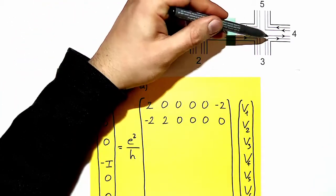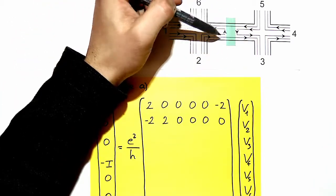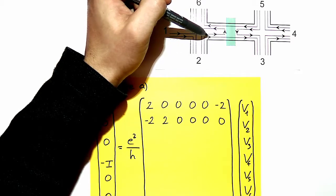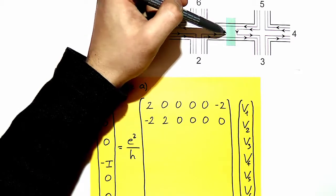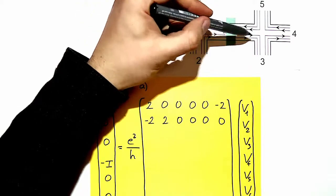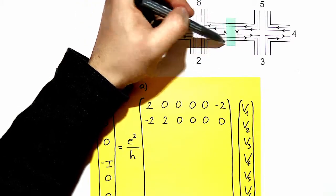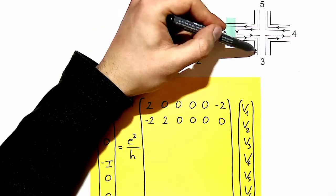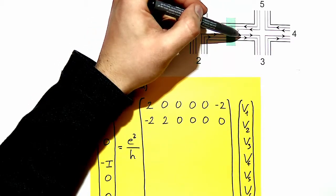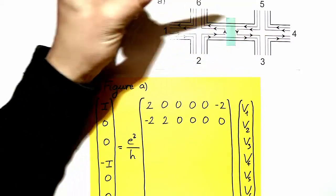At contact 3 the situation is different, because one mode transmitted from contact 2 is reflected into contact 6. So only one mode is incoming from 2, and we also have one incoming from 5, and two are leaving.